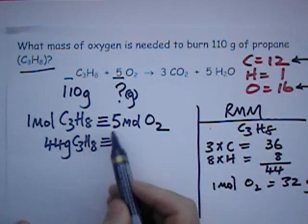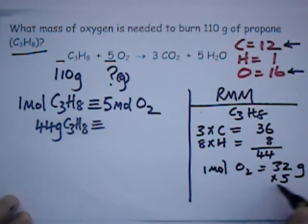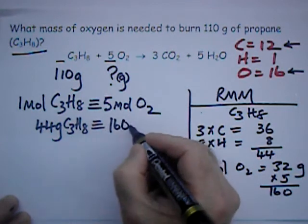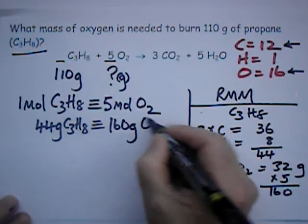Because we have five moles, one should be seen to multiply that by five. And that's 160 grams altogether. Five moles of oxygen is 160 grams of oxygen.